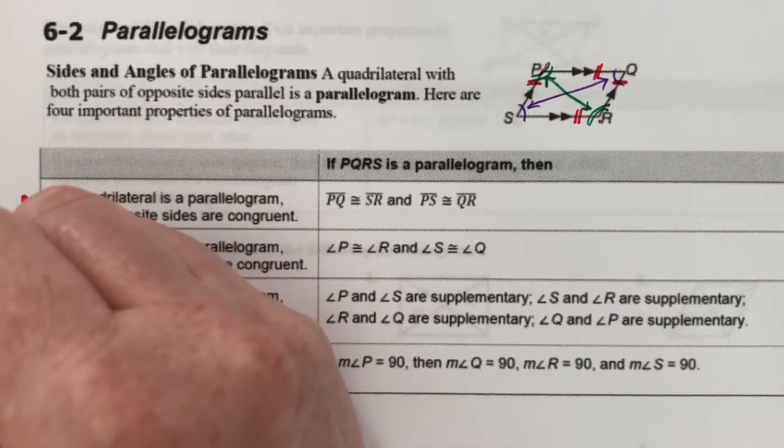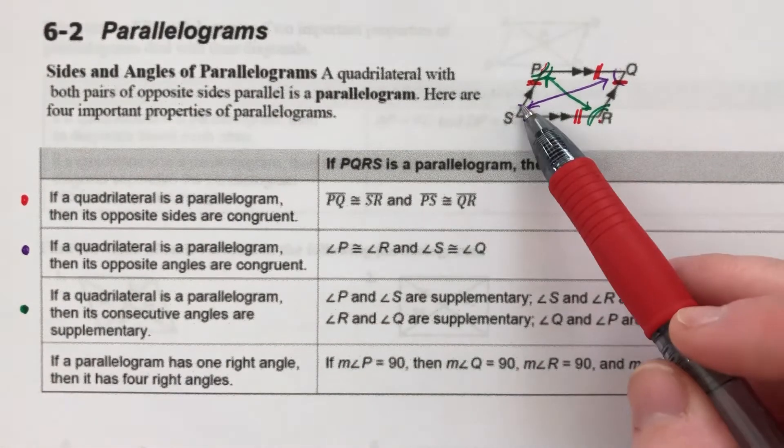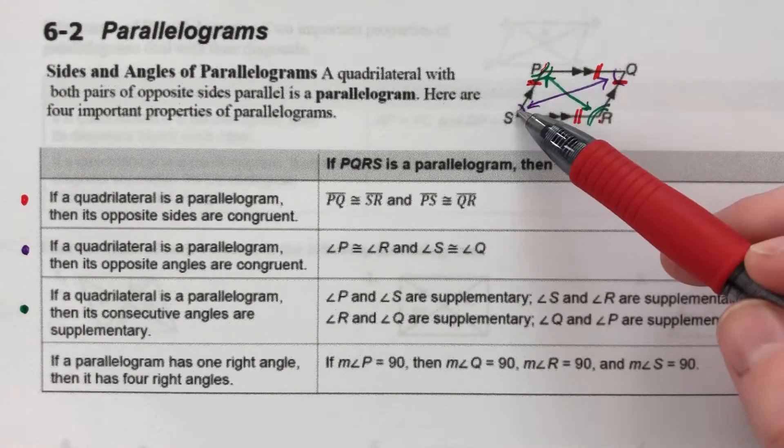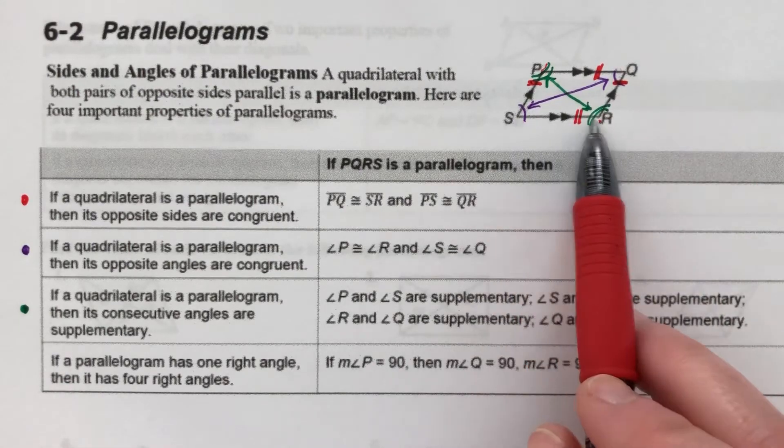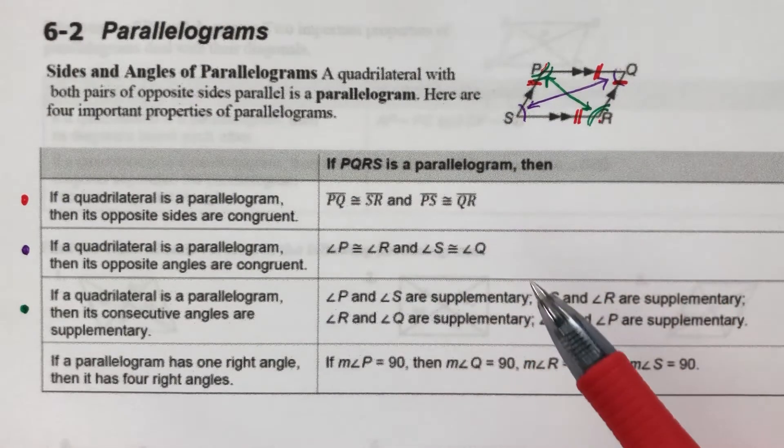Next, if a quadrilateral is a parallelogram, then its consecutive angles are supplementary. So if opposite angles are the same size, adjacent angles, like P and S here, or S and R, these guys will always add up to 180.